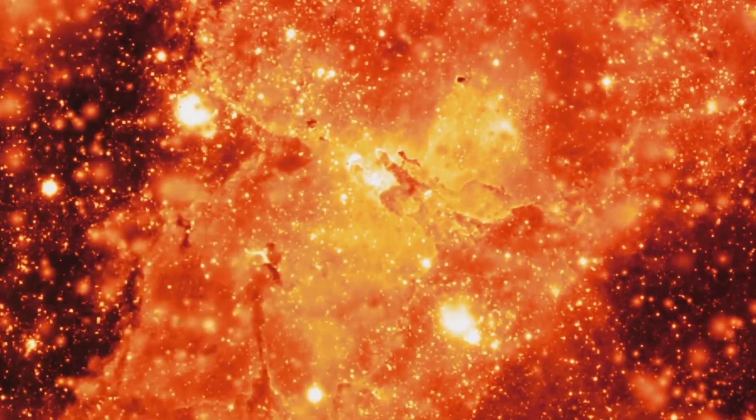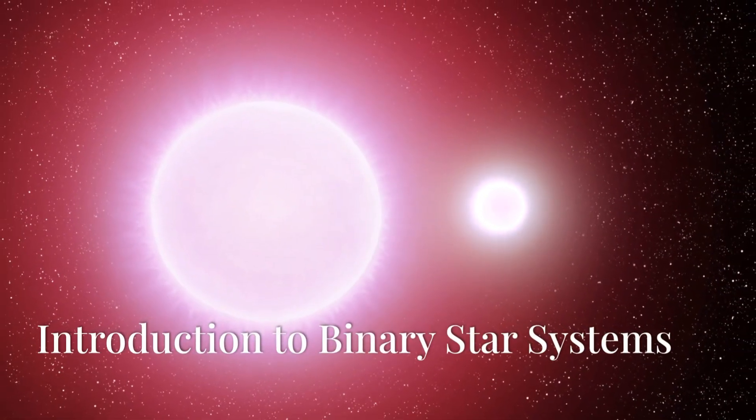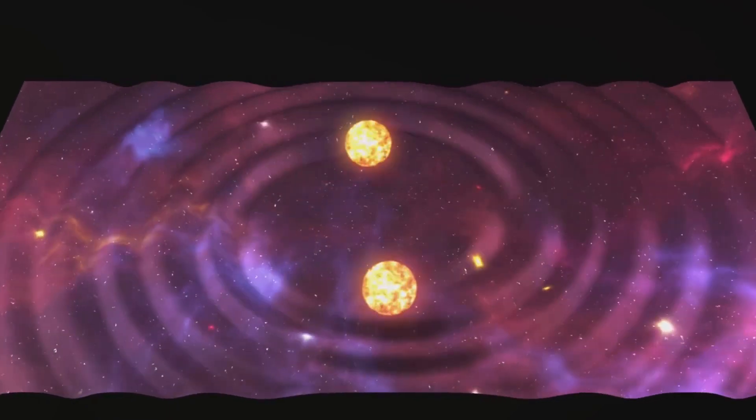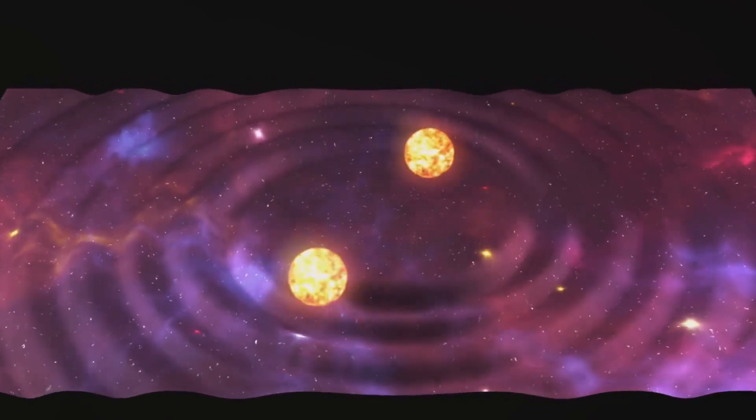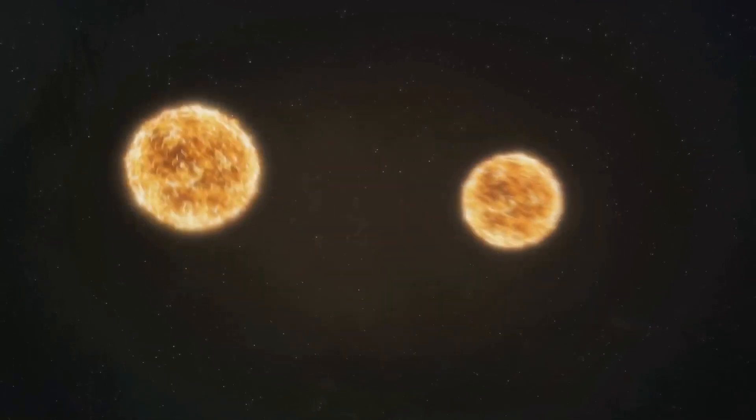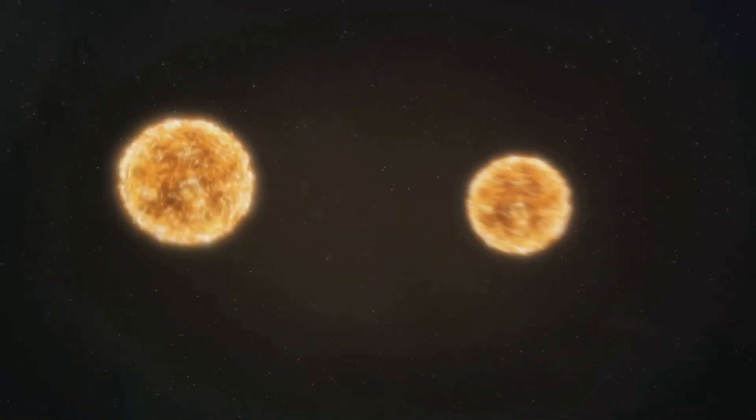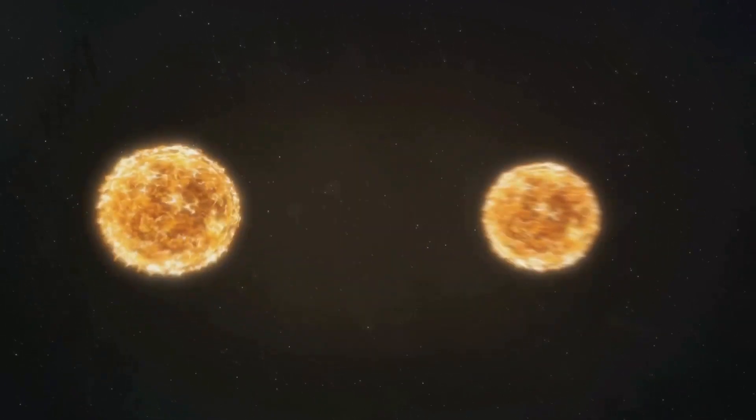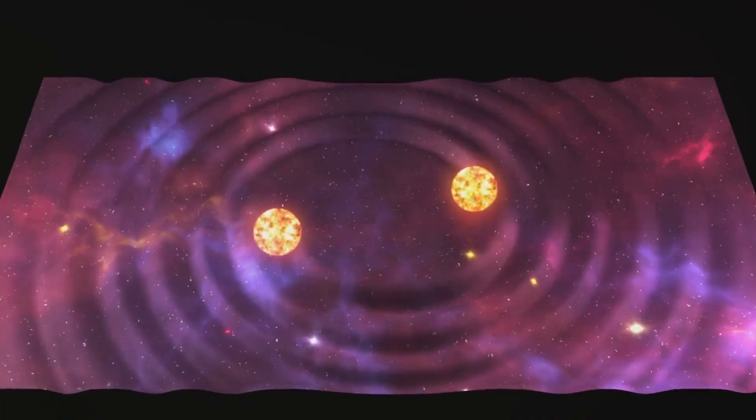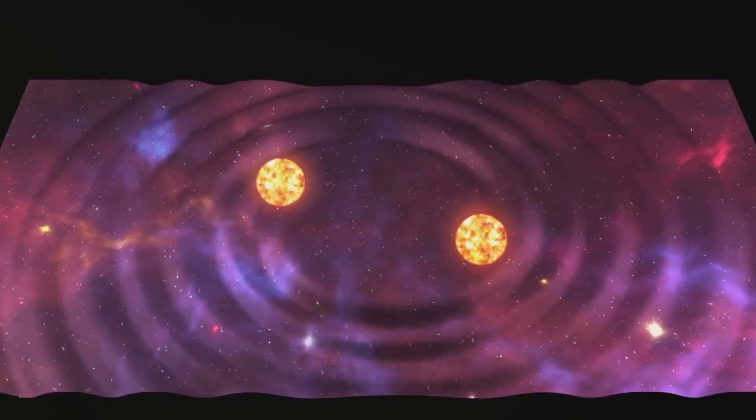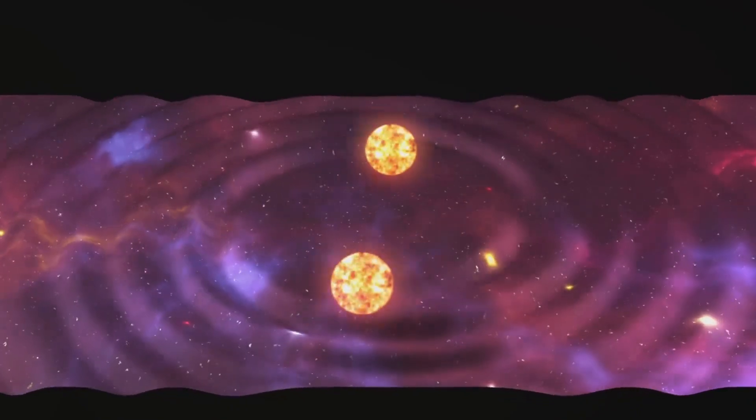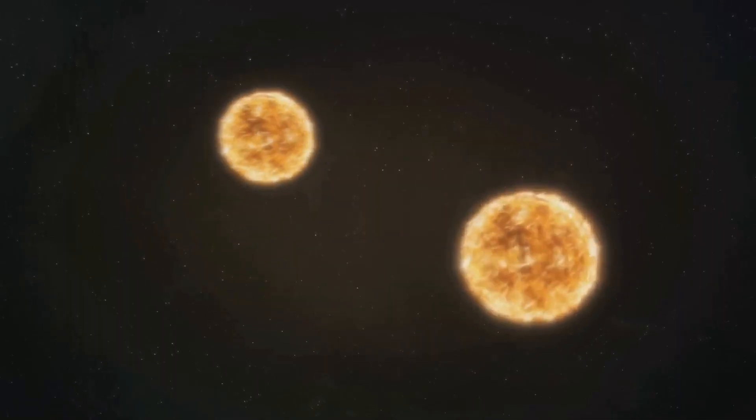Understanding these systems not only unravels the mysteries of stellar evolution but also enhances our broader comprehension of the universe's architecture. A binary star system consists of two stars orbiting a common center of mass. This stellar couple can be as close as a few million miles or as far apart as several billion miles, varying widely in their orbits and physical characteristics. The gravity between them is the glue that holds them together, allowing them to perform a gravitational waltz that can last billions of years.